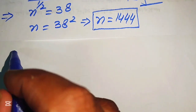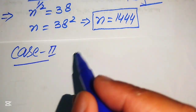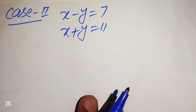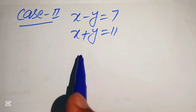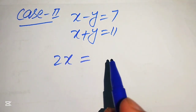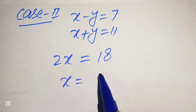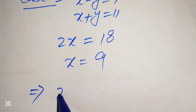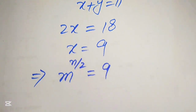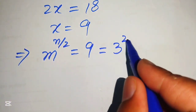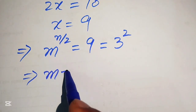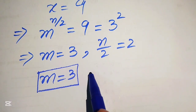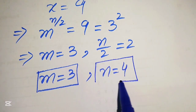In case 2, x minus y equals 7 and x plus y equals 11. Adding these two equations gives 2x equals 18, so x equals 9. Back-substituting, x equals m to the power of n over 2 equals 9, and we write 9 as 3 squared. Comparing both sides, m equals 3 and n over 2 equals 2, giving n equals 4. So m equals 3 and n equals 4 are the natural number solutions.